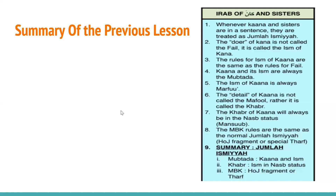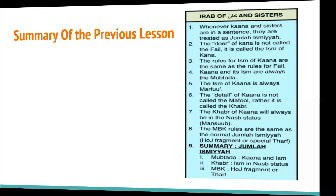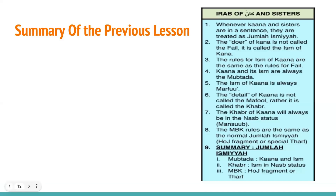In a jumlah with af'al naqisa, the muptada is the failinaqis plus its ism. The khabr is an ism which is in nasb status — the detail of kana. A mutalik bil khabr can be a harf jarf fragment or zarf fragment, a special mudaf of time and place. This is the summary of the previous lesson.